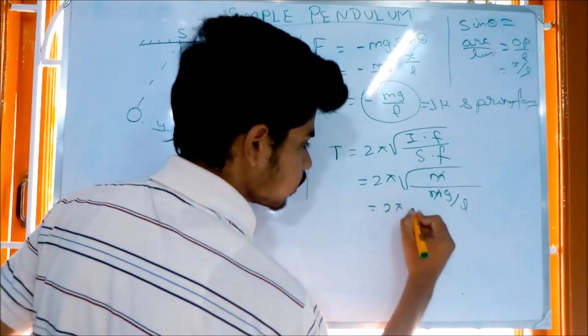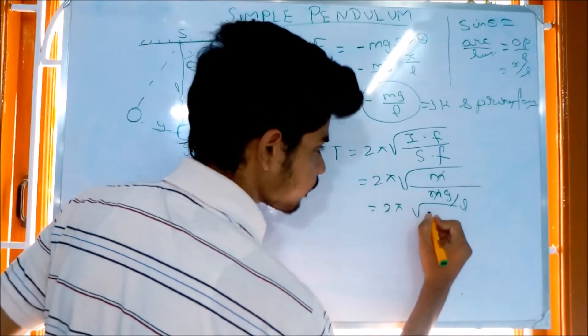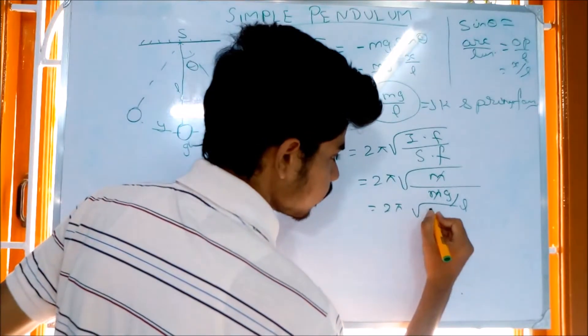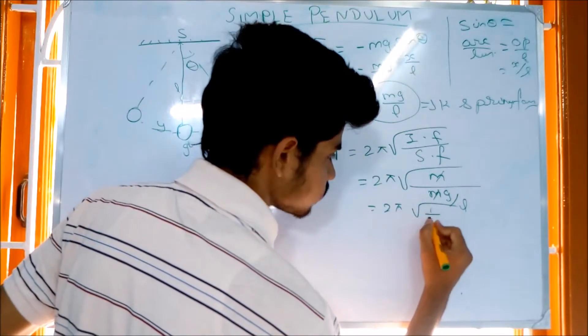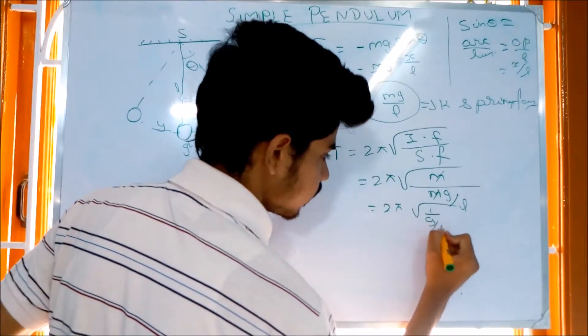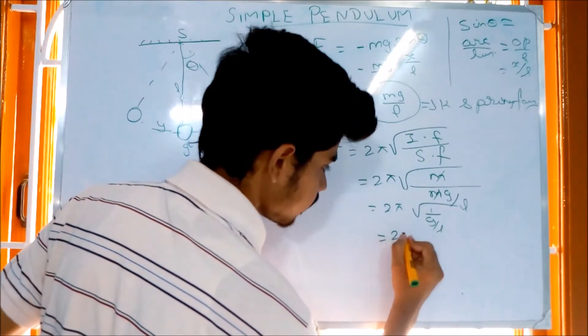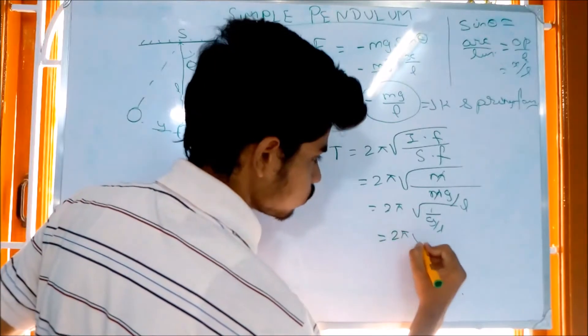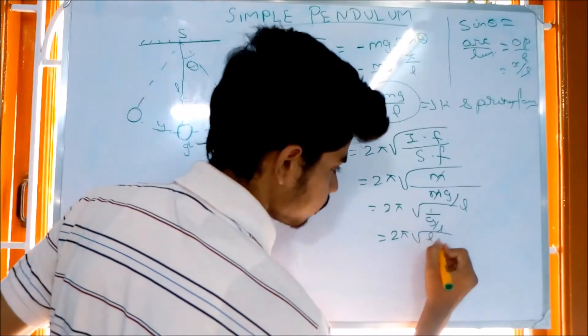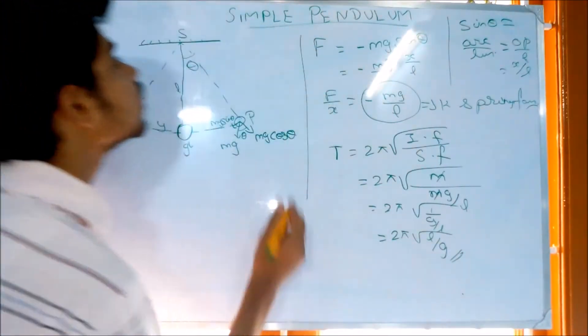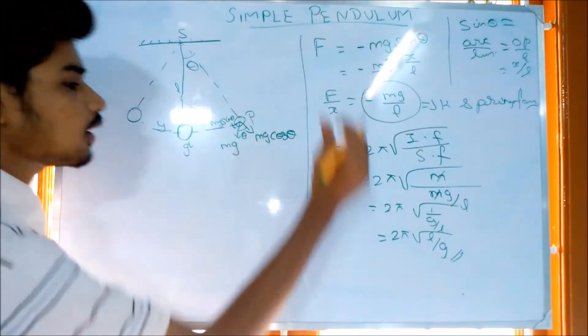So we get 2 pi root of the inverse of g by L, which gives us T equals 2 pi root of L by g. This is the time period of the simple pendulum.